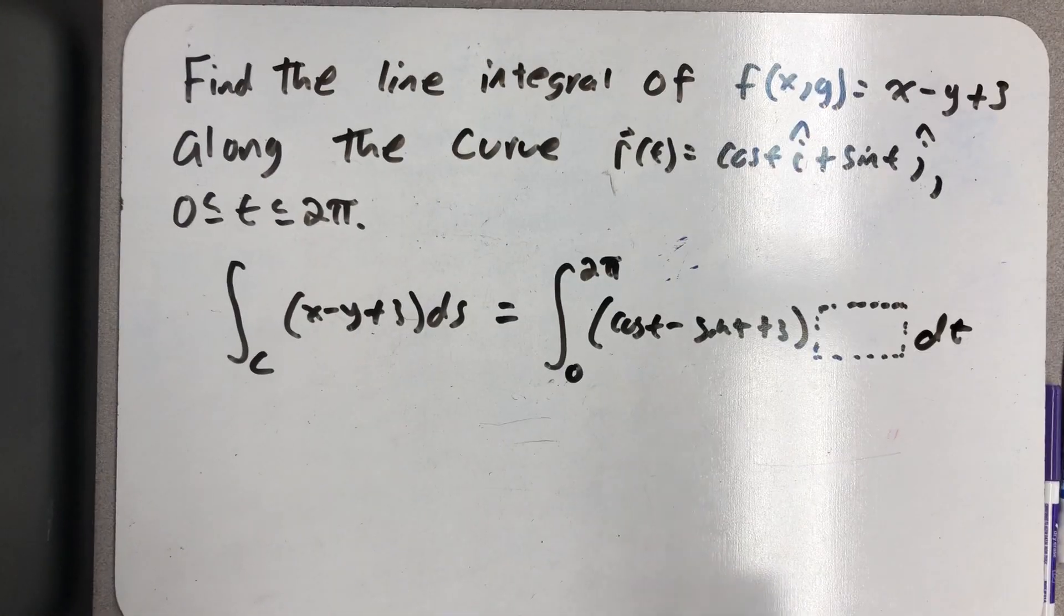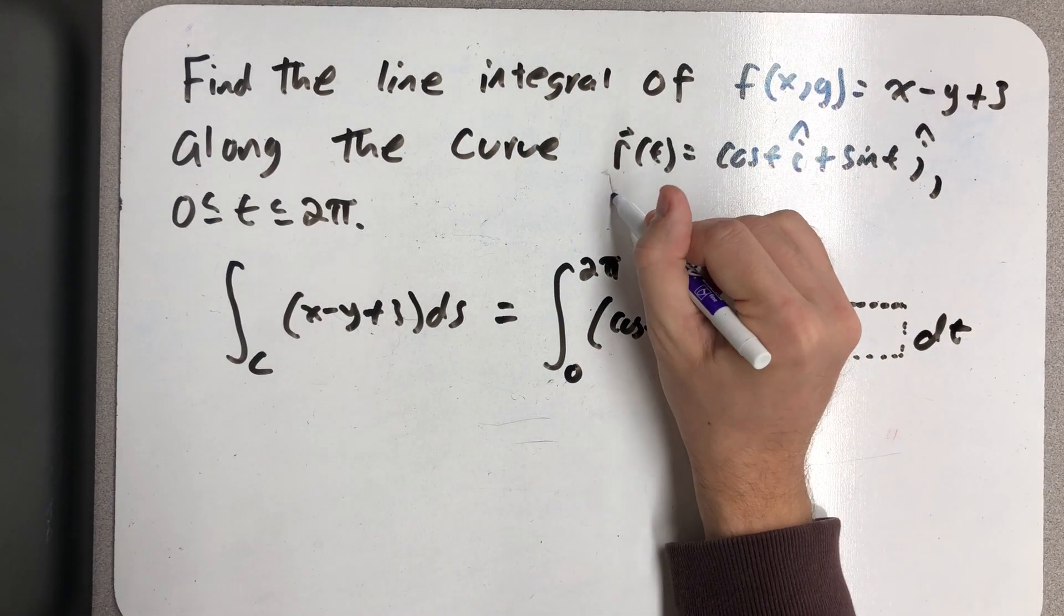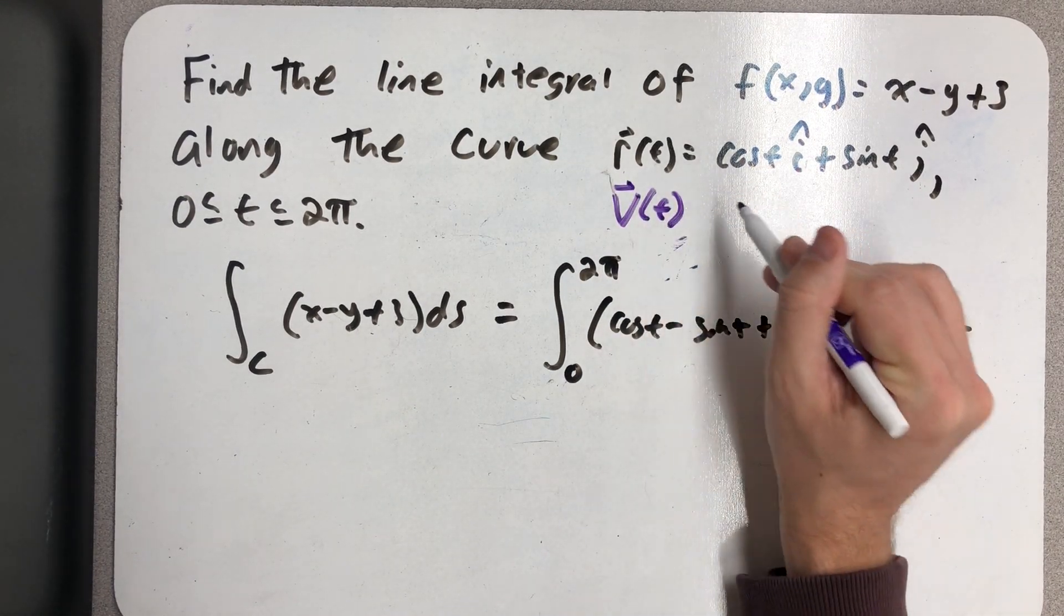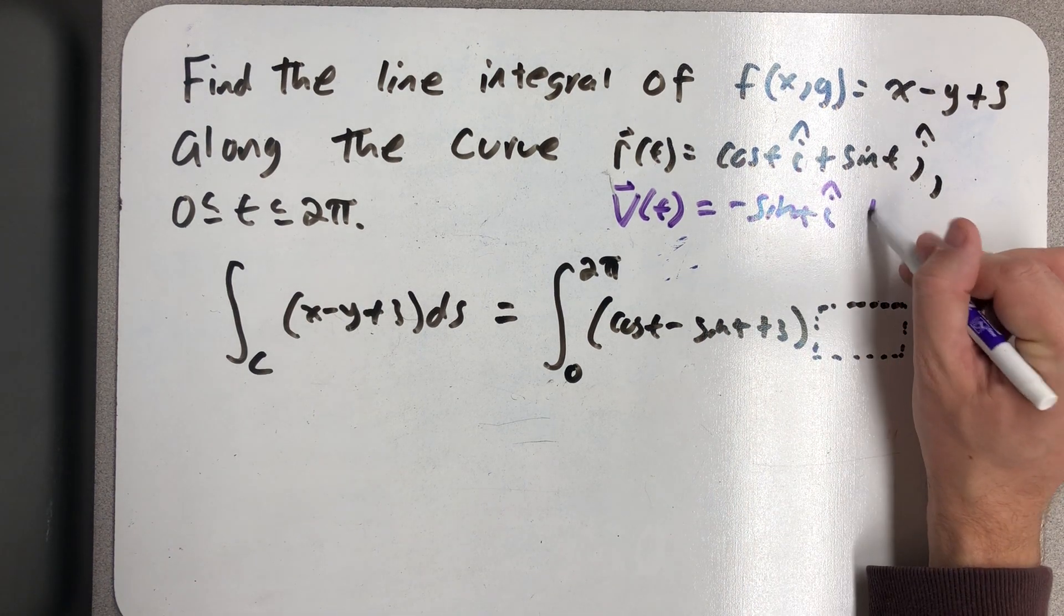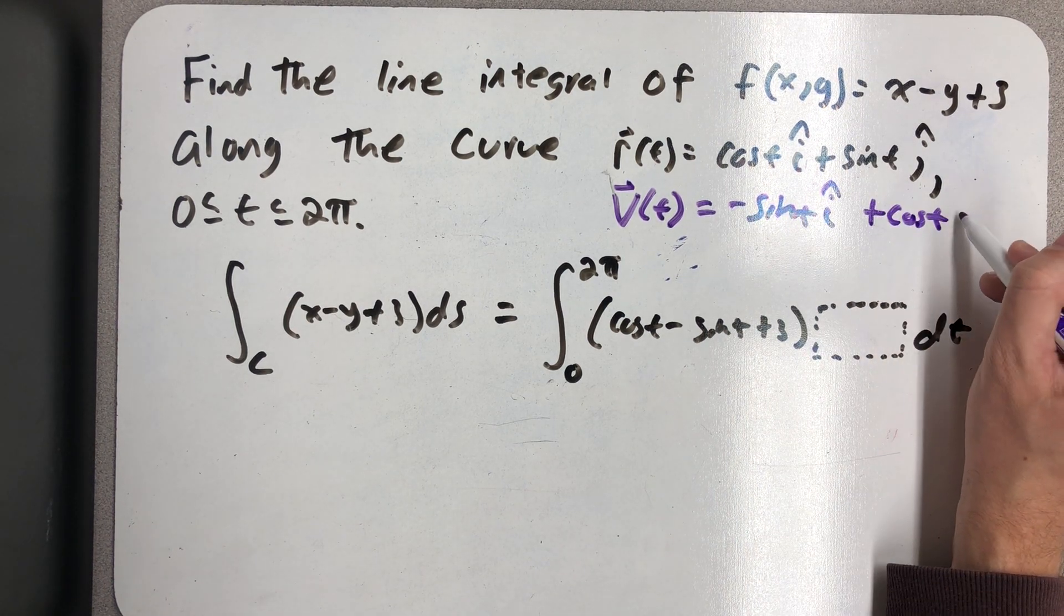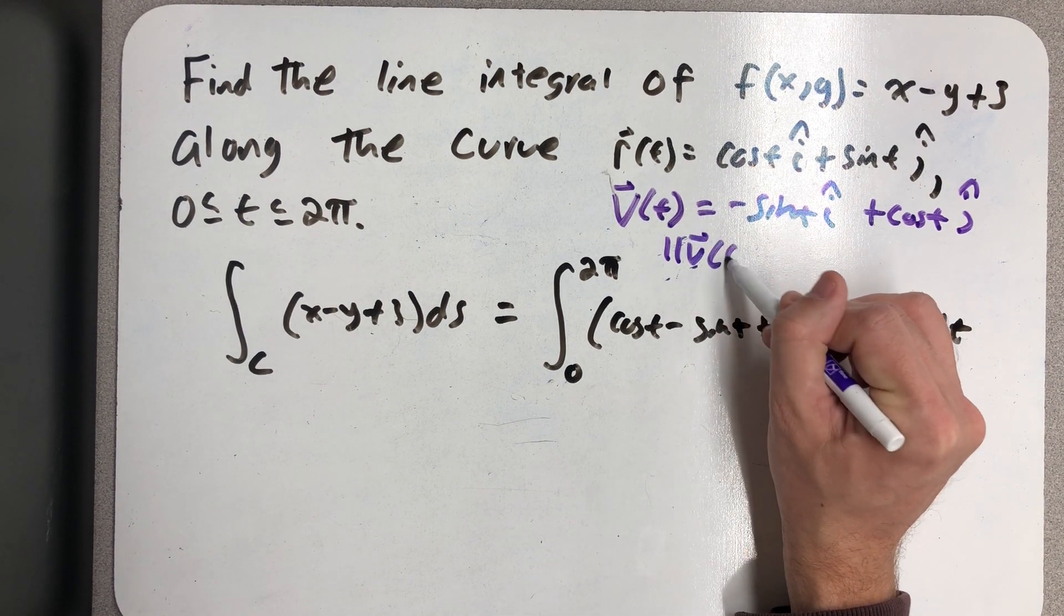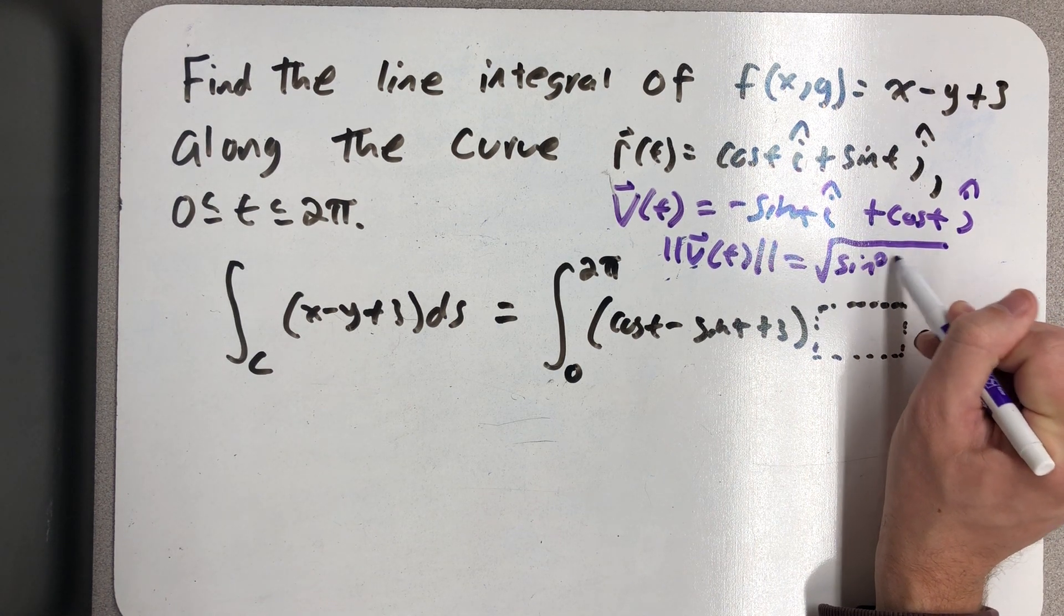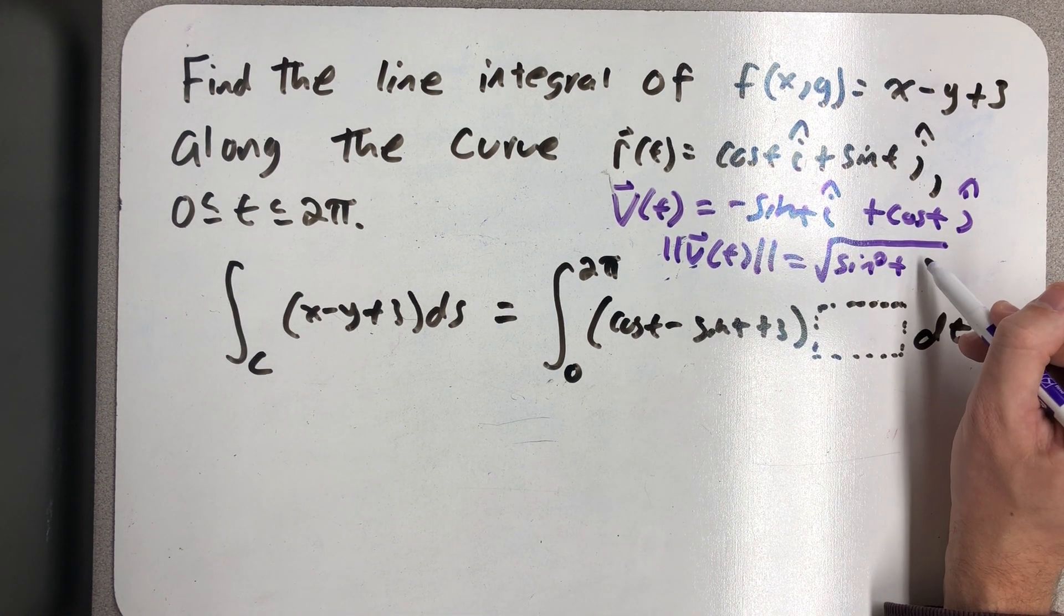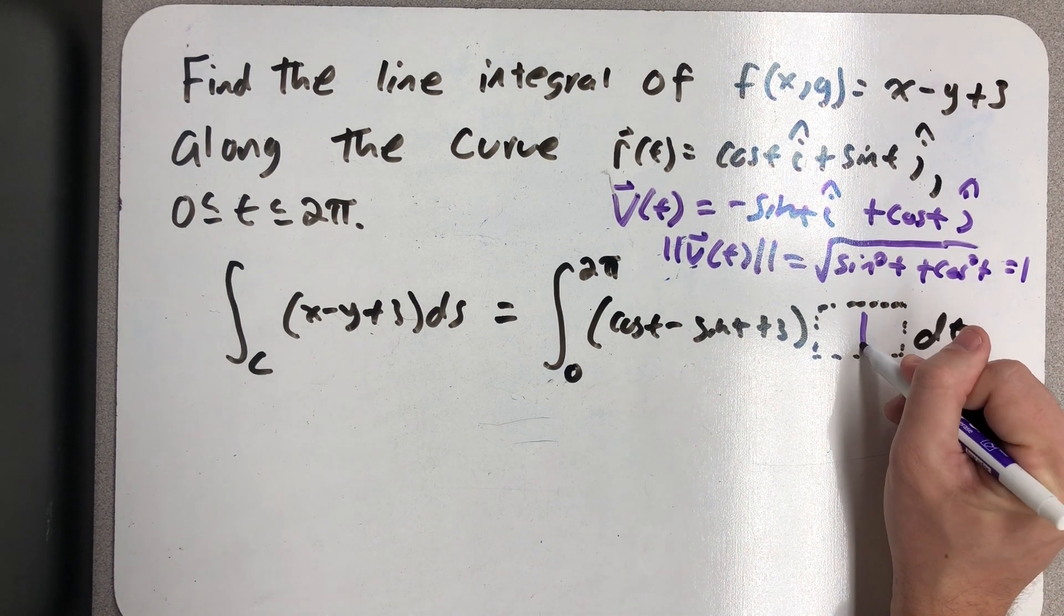So let's find the velocity vector so that I can then find what to plug in here for speed. Well, we've done this before, so it's probably not too big of a surprise what's going to happen here. And the speed is 1.